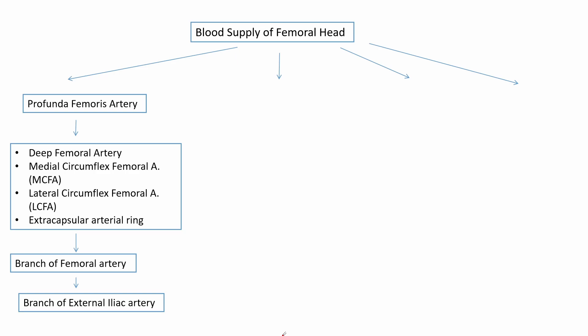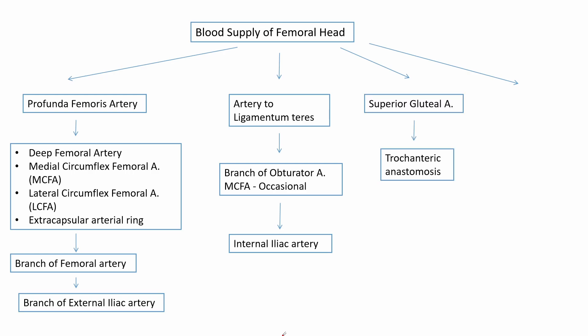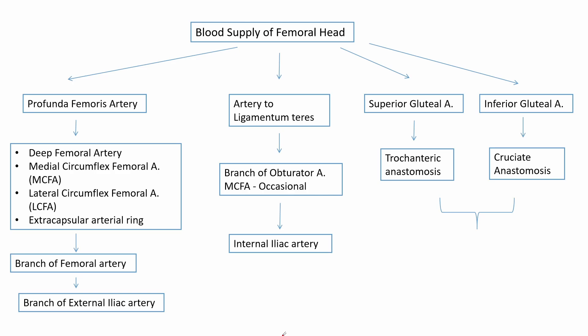The other arteries have minor contributions to the femoral head blood supply. The next most important is the artery to ligamentum teres, which is usually a branch of the obturator artery, which is a branch of the internal iliac artery. The superior gluteal artery also contributes a little to the supply of the femoral head through the trochanteric anastomosis, and the inferior gluteal artery has a minor contribution through the cruciate anastomosis. Both the superior and inferior gluteal arteries are branches of the internal iliac artery.